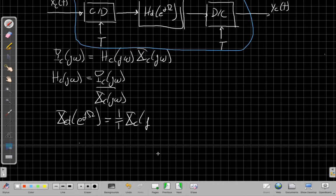And just the copy at zero really matters. So I get X of jΩ at Ω/T, and this is assuming...